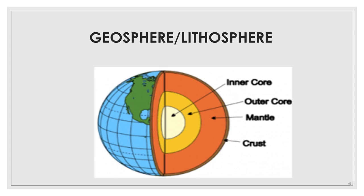As we go deeper into the earth, it gets hotter and hotter and the pressure increases. The core has two parts: outer core and inner core. The outer core is liquid and the inner core is solid. All the natural resources of the earth are found on the lithosphere, which makes it very, very important.